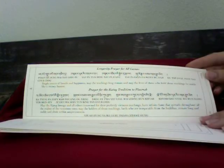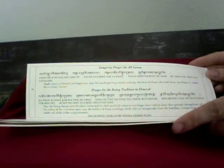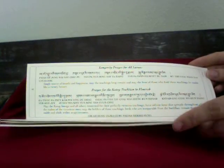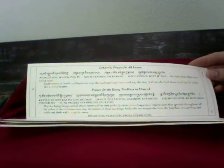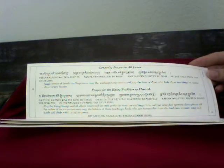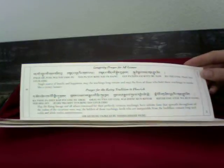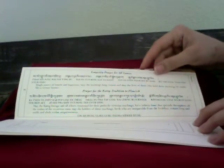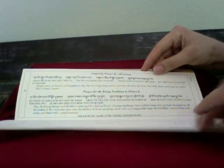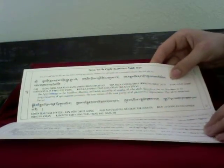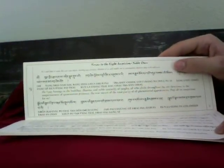Rinpoche didn't want to put his own long life prayer or any specific lamas' prayers in the main text, since it's like an actual main text. However, there's a separate sheet with the Dalai Lama's long life prayer and Katok Rinpoche's long life prayer that you keep separately and do before the longevity prayer for all lamas. There are also additional prayers in this booklet, including the eight verses to the eight auspicious noble ones, which we always do before beginning any practice or at the beginning of a retreat.